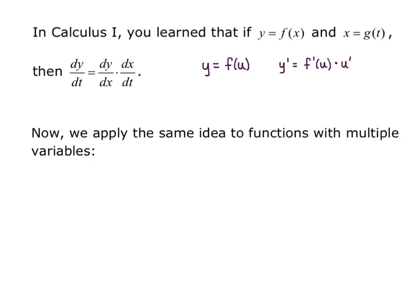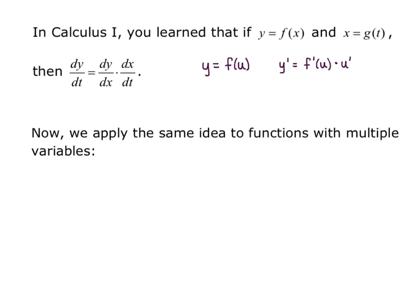Now we apply the same idea to functions with multiple variables. If z equals f of x, y, x equals g of t, and y equals h of t, then dz/dt equals (∂f/∂x)(dx/dt) plus (∂f/∂y)(dy/dt). This is sometimes written as dz/dt equals (∂z/∂x)(dx/dt) plus (∂z/∂y)(dy/dt). Notice that f and z are interchangeable.